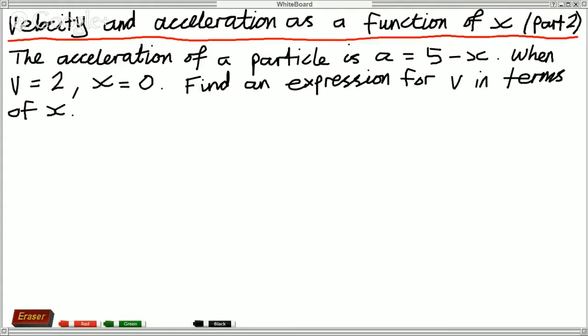Okay so what do we have? We have a equals 5 minus x and now we need an expression for v in terms of x. So we need to replace the a with something to do with v. So what I'll go about doing is replacing the a with d/dx a half v squared.